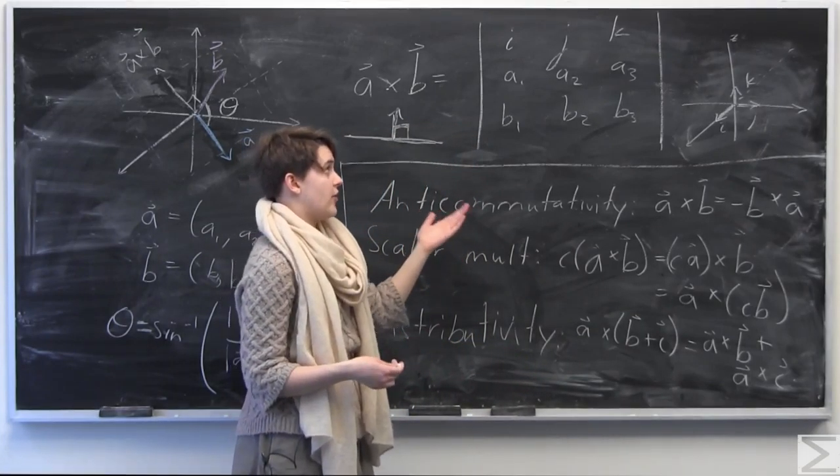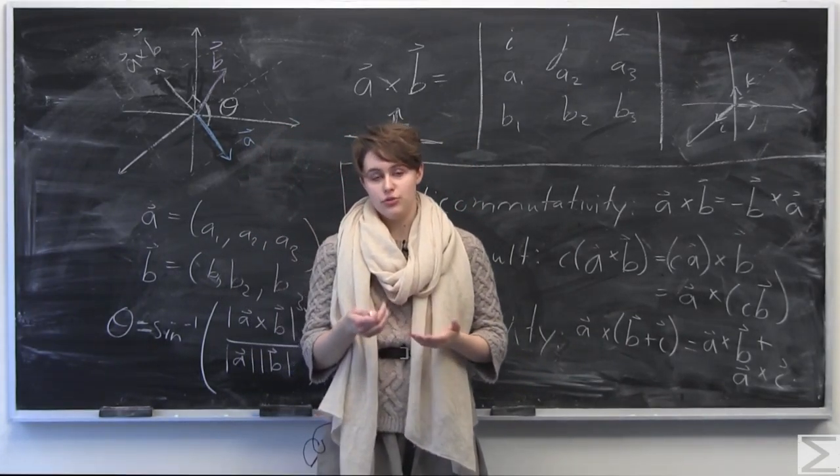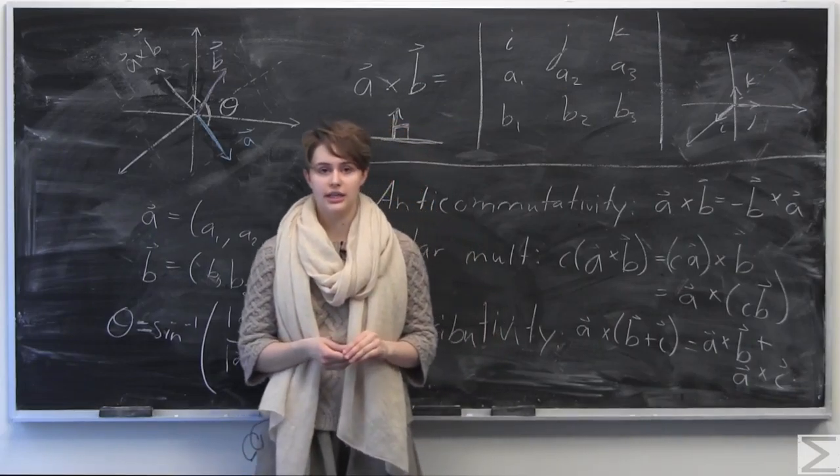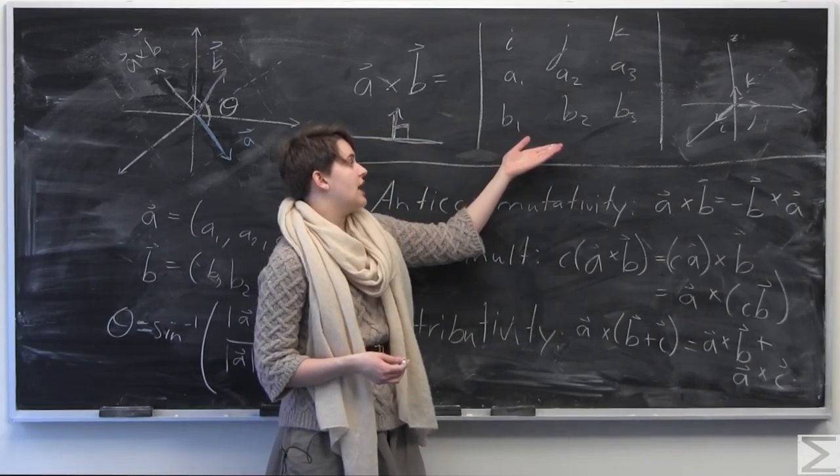So we're just putting these as placeholders here in the top row. So we have i, j, and k in the top row, a1, a2, a3 in the second row, and b1, b2, b3 in the third row here.